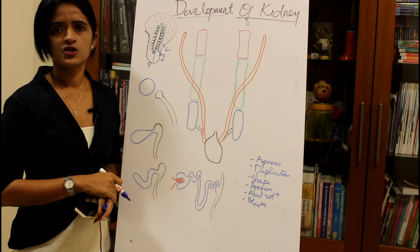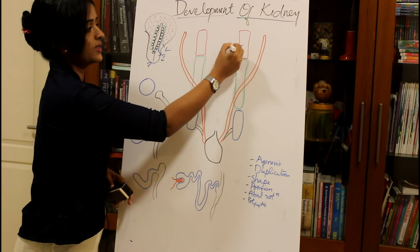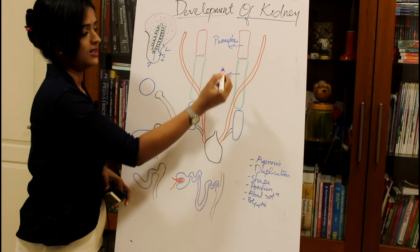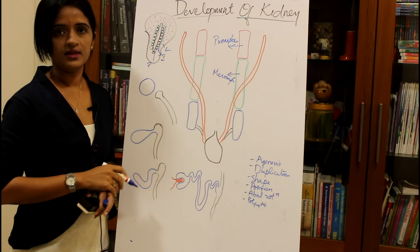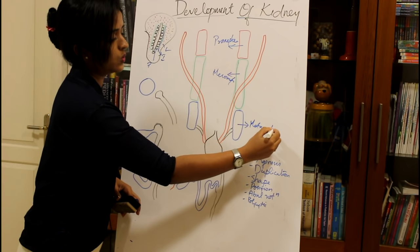The development of kidney undergoes three phases according to evolution. Fishes had kidneys developed from the pronephros. Higher vertebrates including anamniotes had kidneys developed from the mesonephros, and vertebrates including human beings develop the kidney from the metanephros.